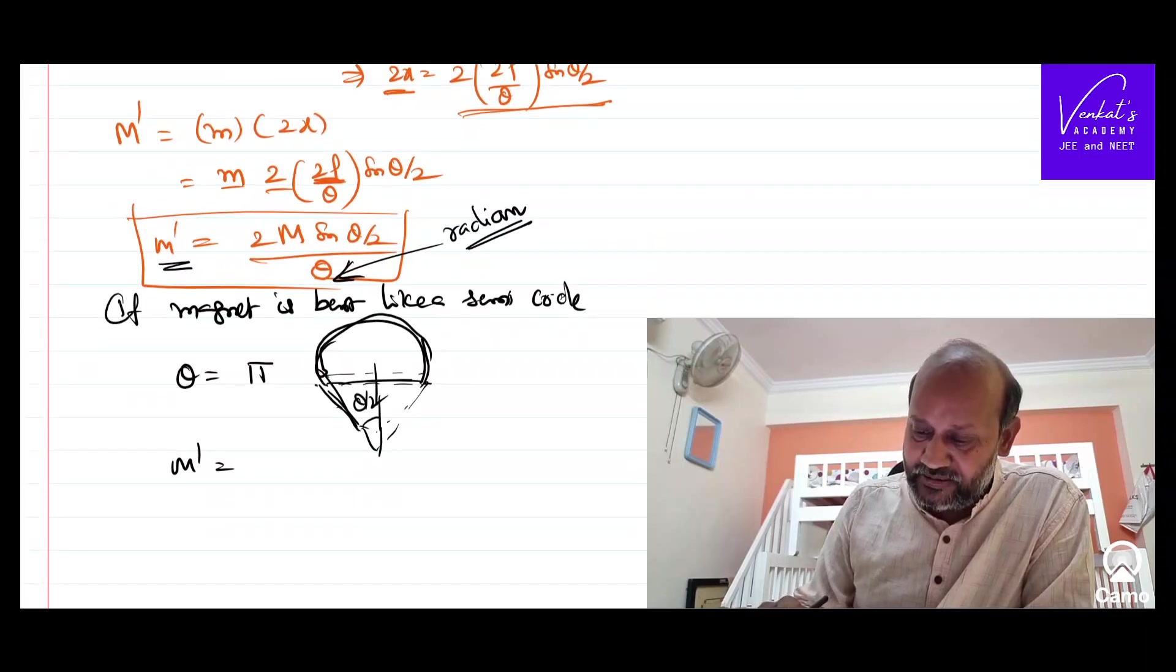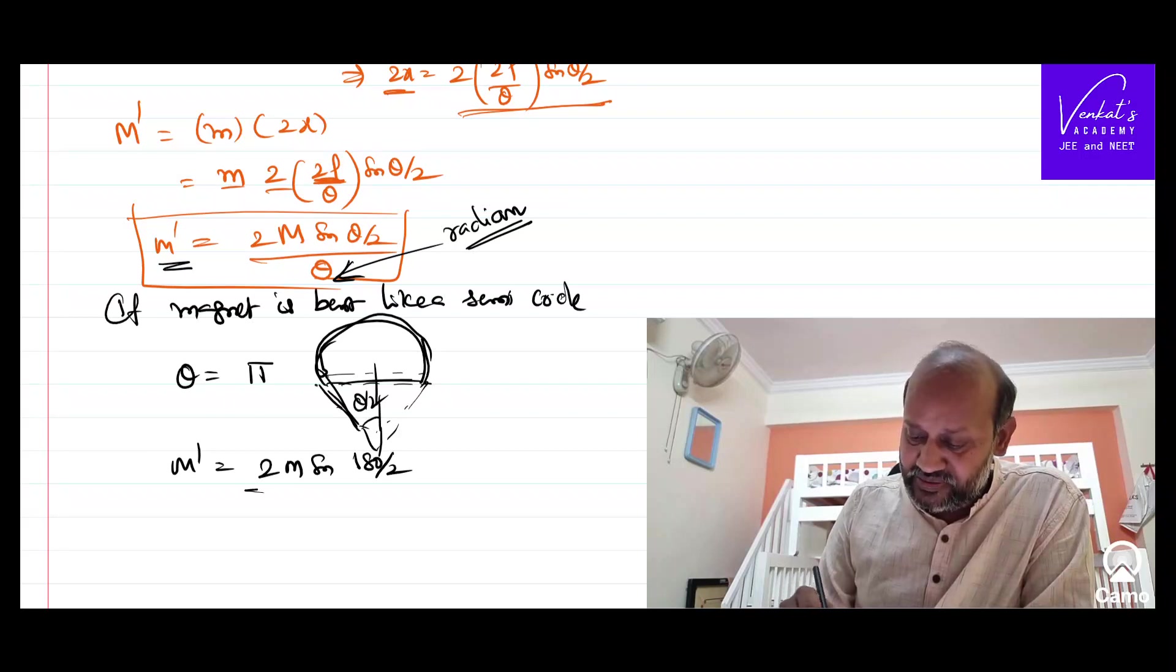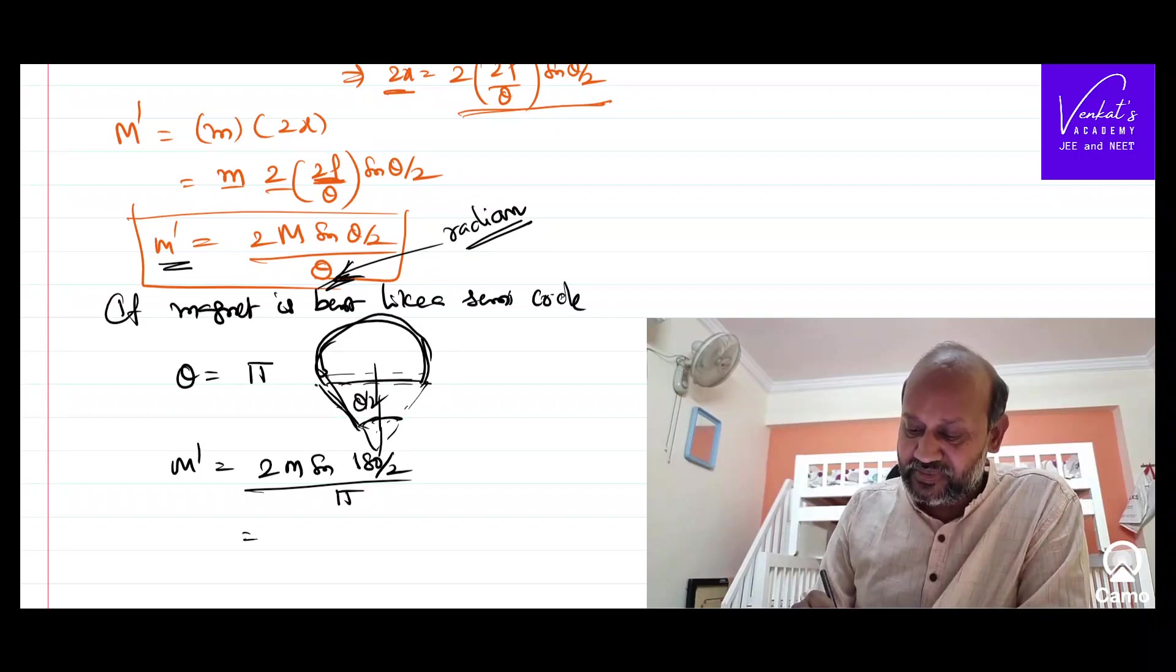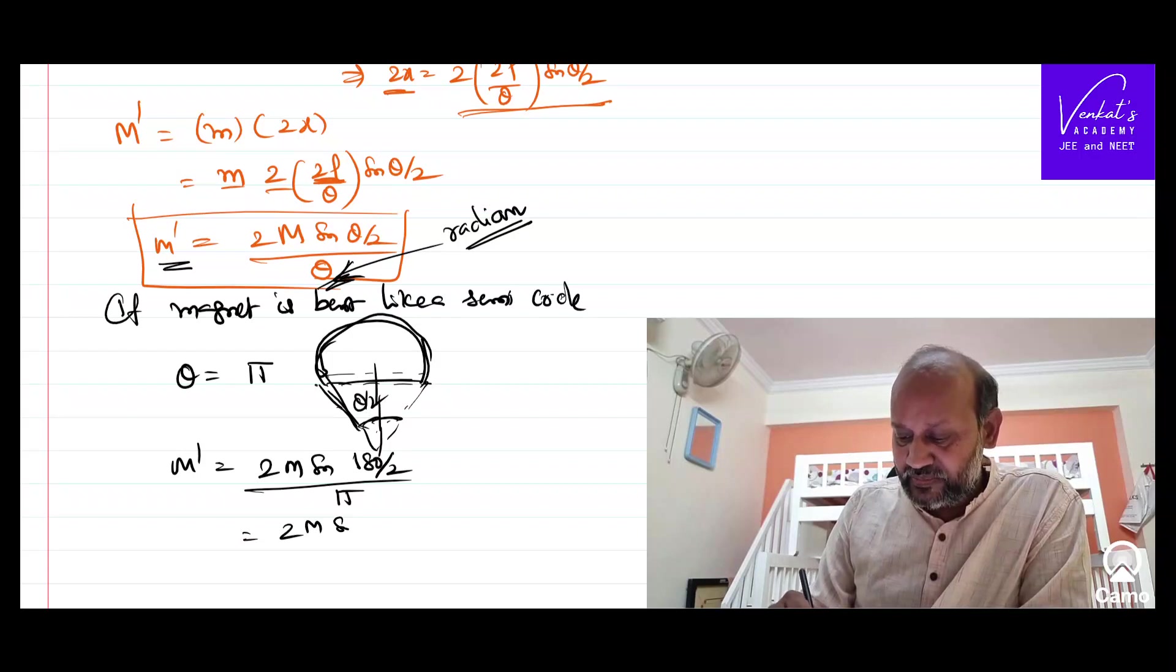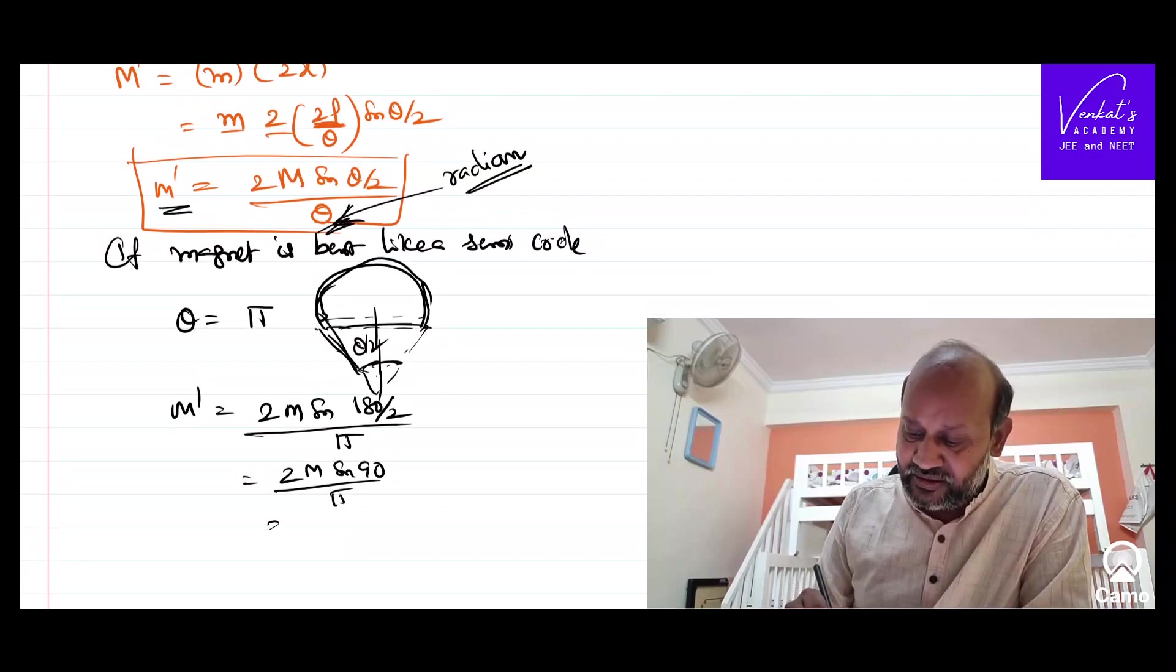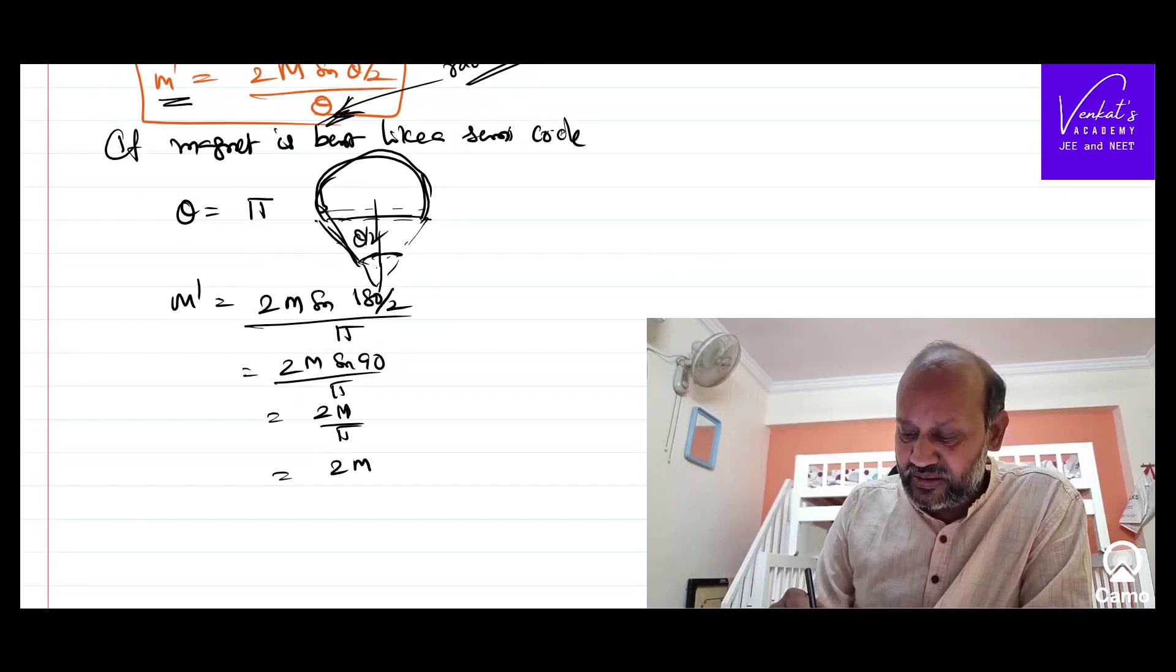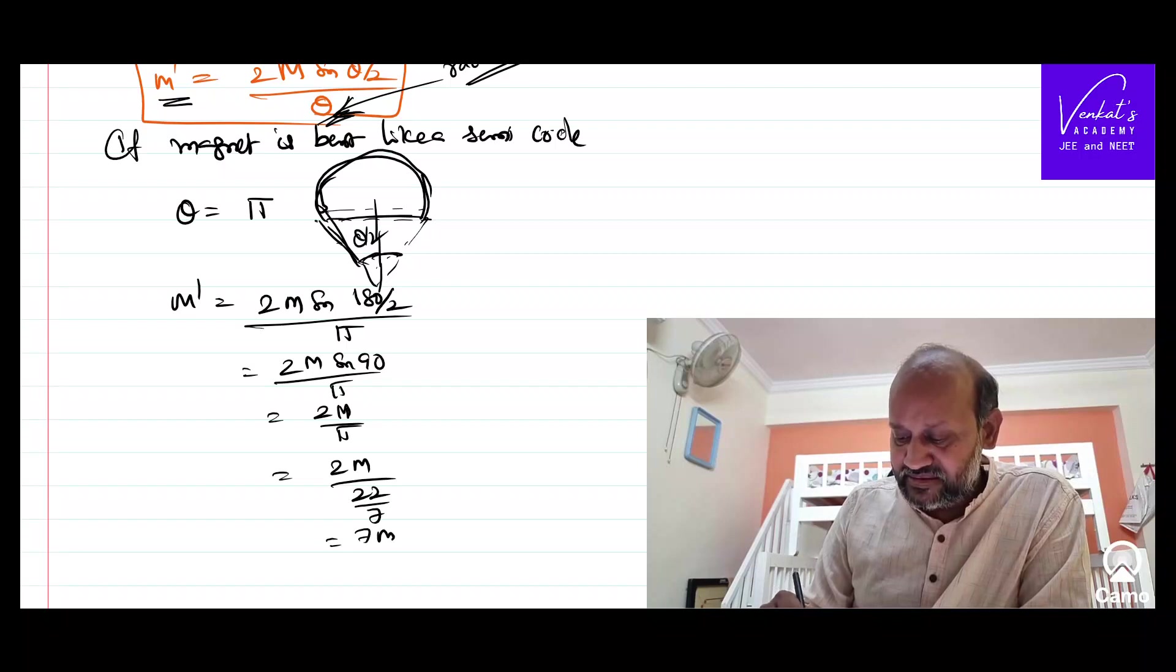M dash will be 2M sin theta by 2, that theta is 180 by 2, by theta. Be careful this theta has to be written in radians. As it is semi-circle, angle is pi. That is 2M sin 90 by pi. I know sin 90 value already as 1. So 2M by pi is our answer. I can even further simplify as 2M by pi as 22 by 7, that is 7M by 11.